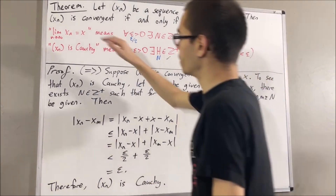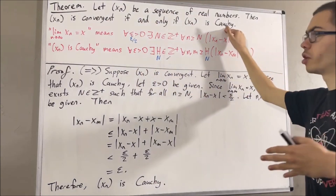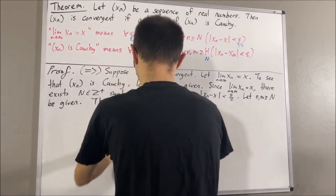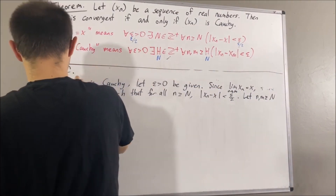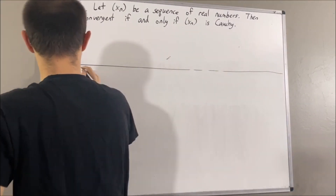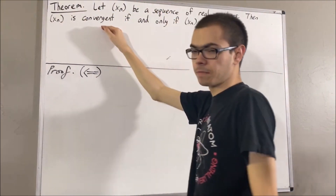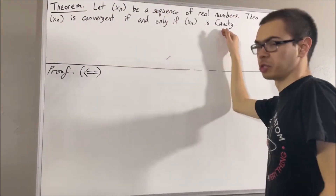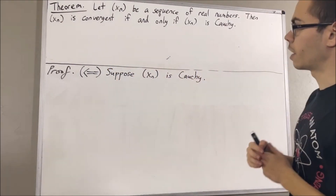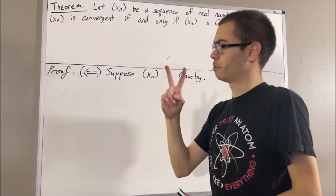So at this point, we have proven if xn is convergent, then xn is Cauchy. Now we're going to prove if xn is Cauchy, then xn is convergent. So let's suppose that xn is Cauchy. In this direction of the proof, we are going to use two preliminary results.